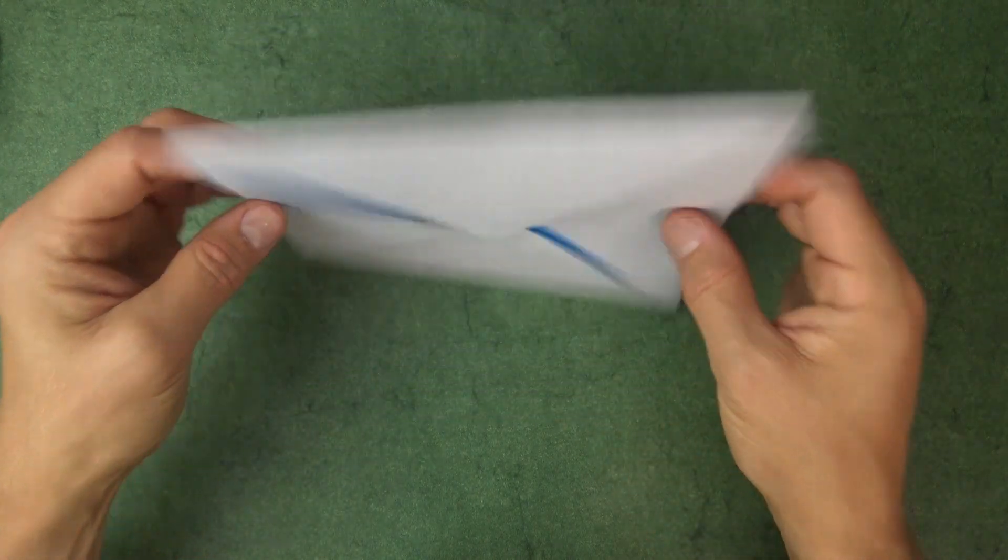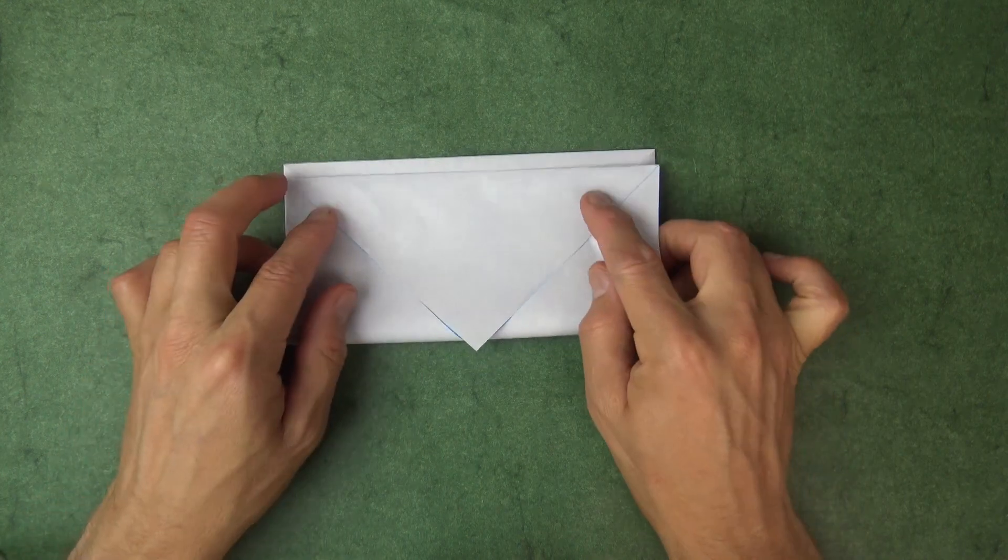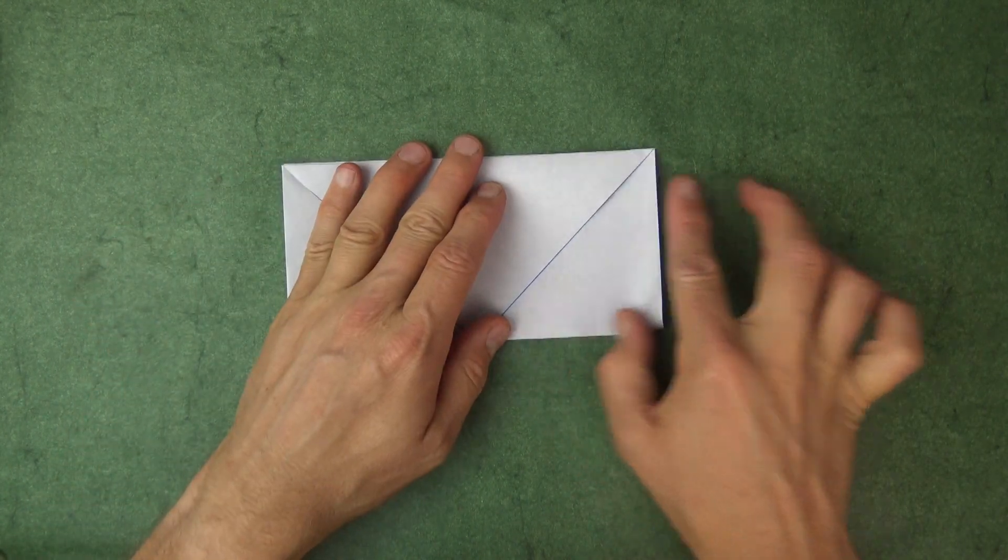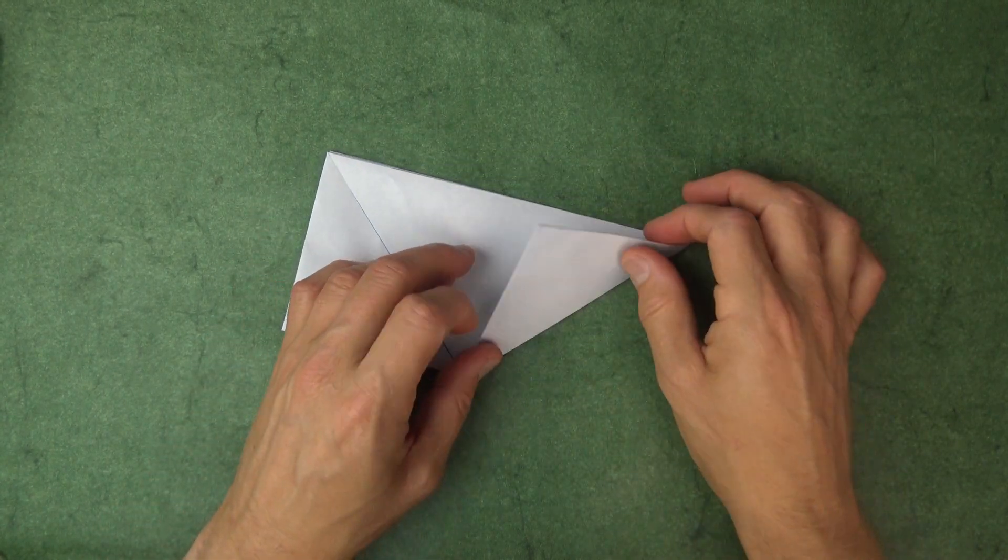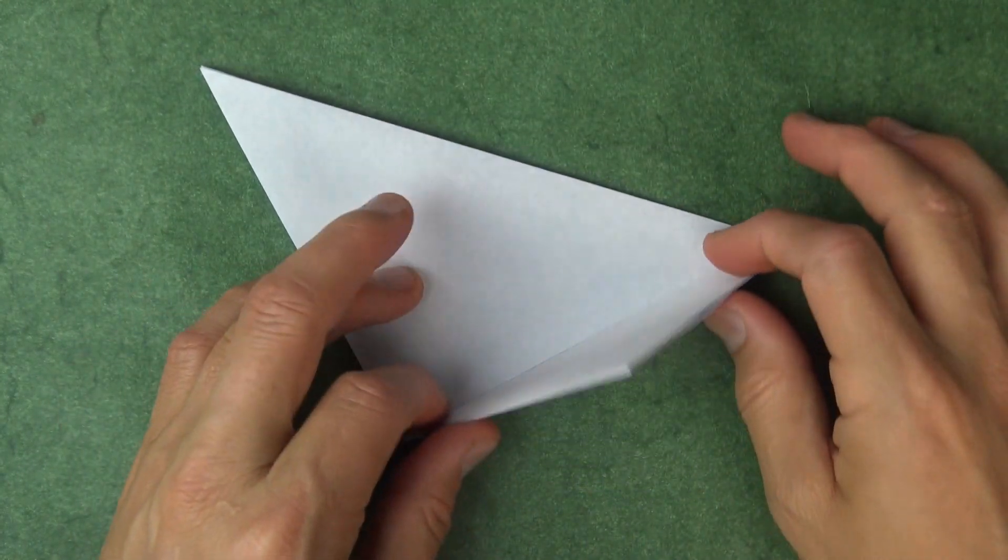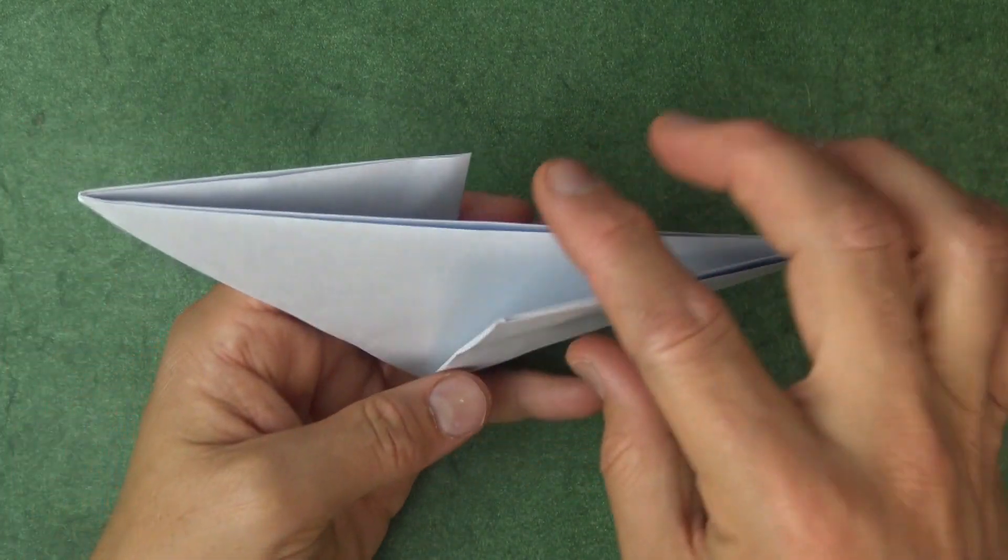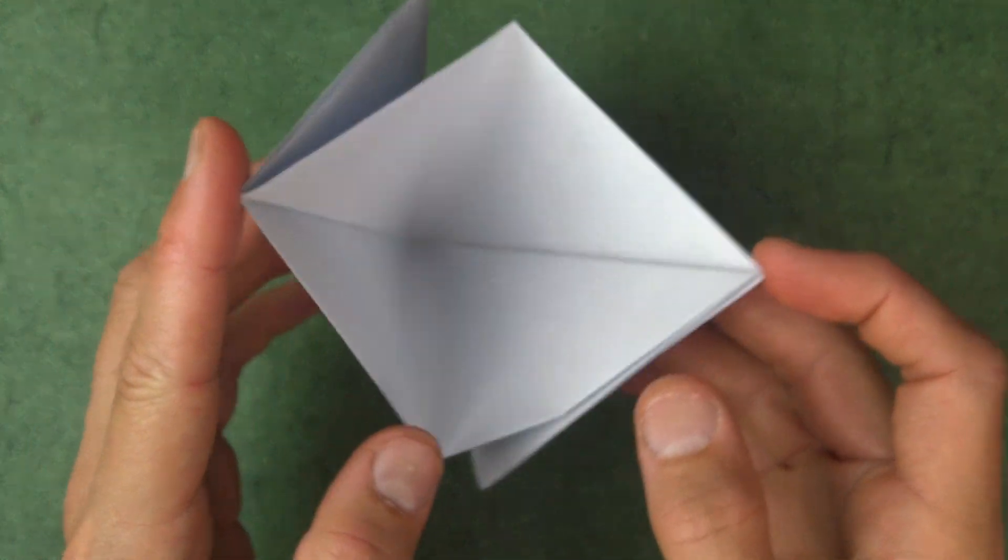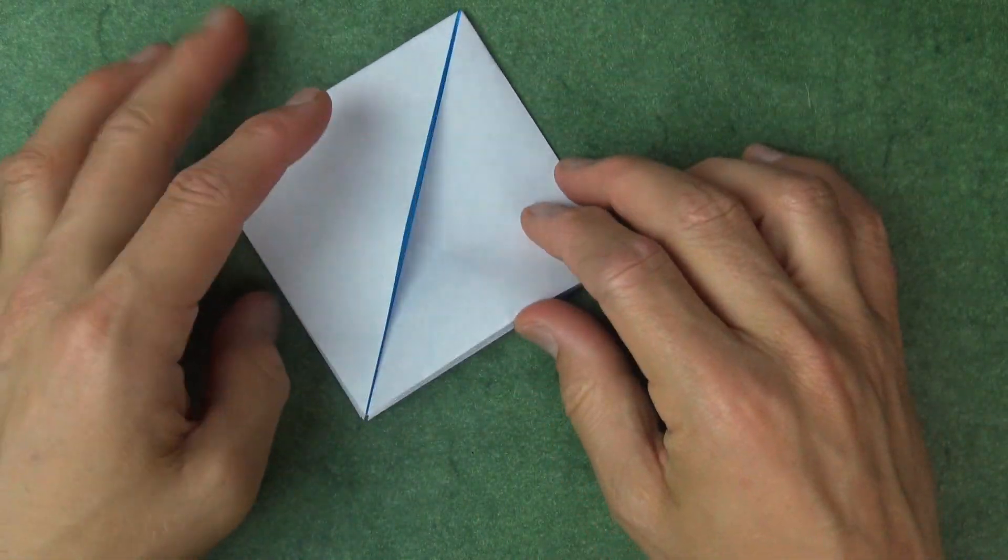And now turn over and we're going to fold a square base. So fold in half. And fold this flap up. And turn over and fold this flap up. Open the big pocket, put your finger inside, and push these two points together and flatten.